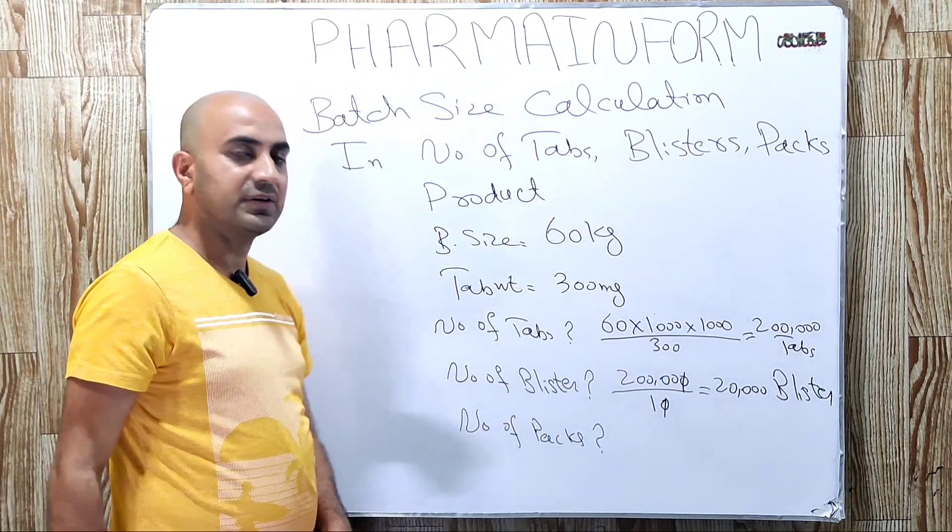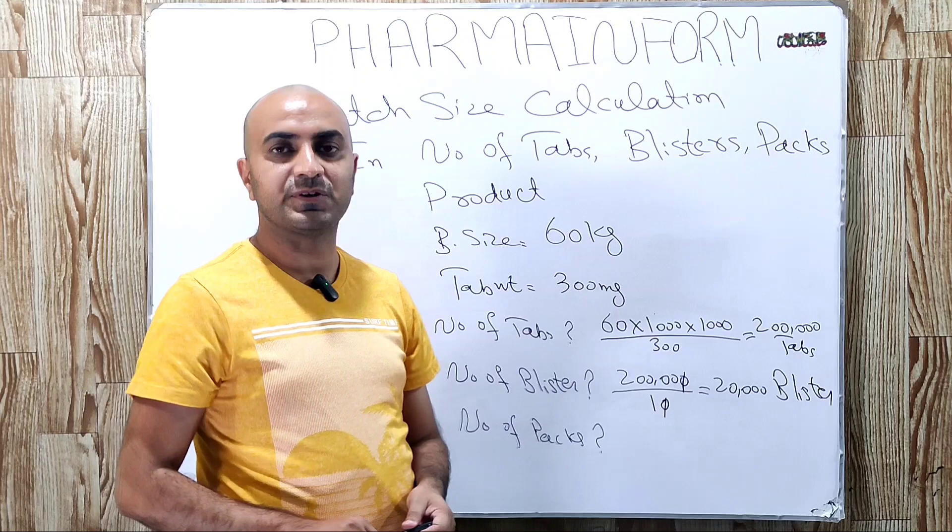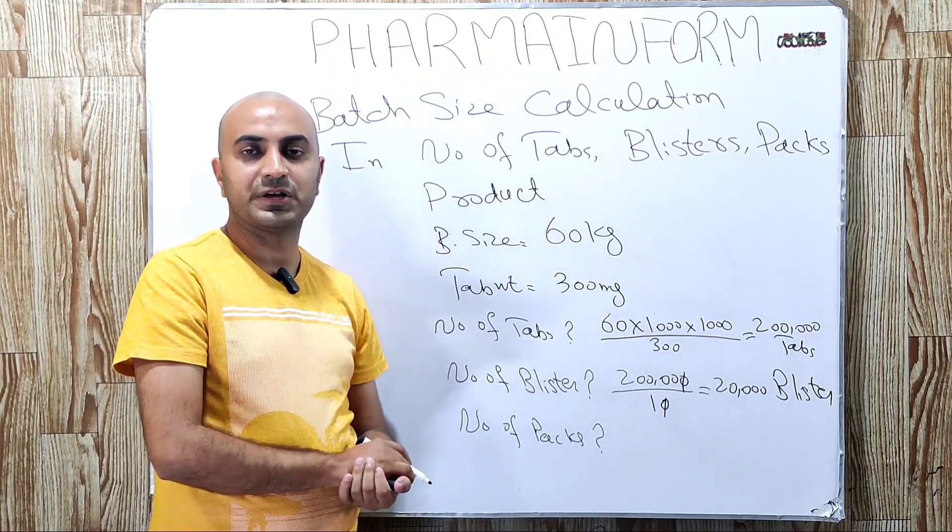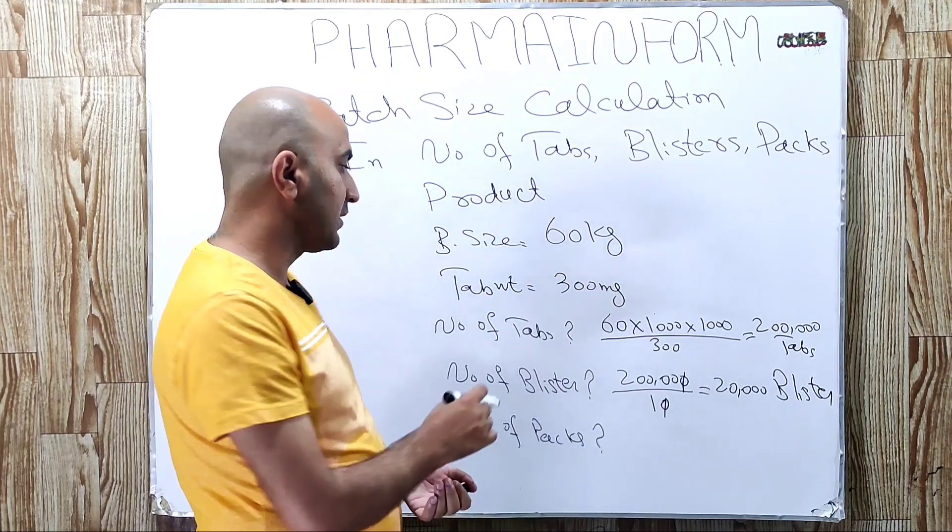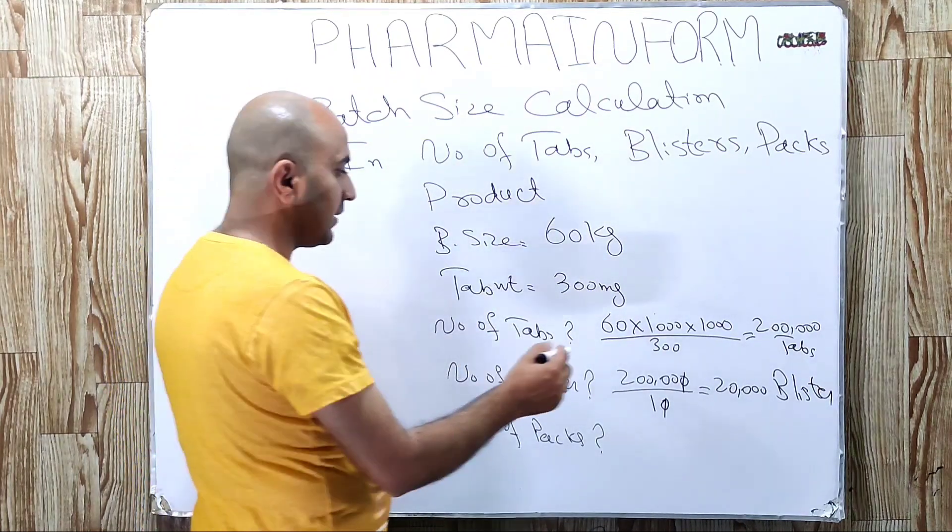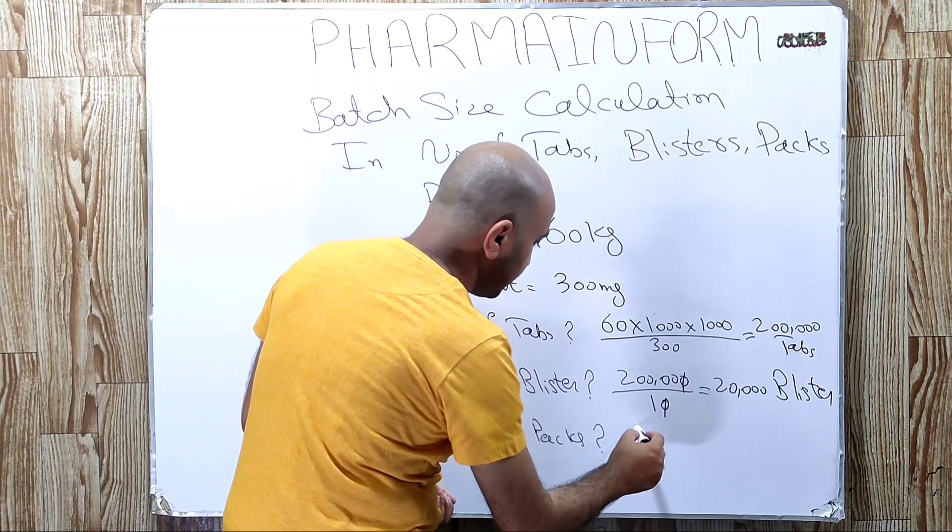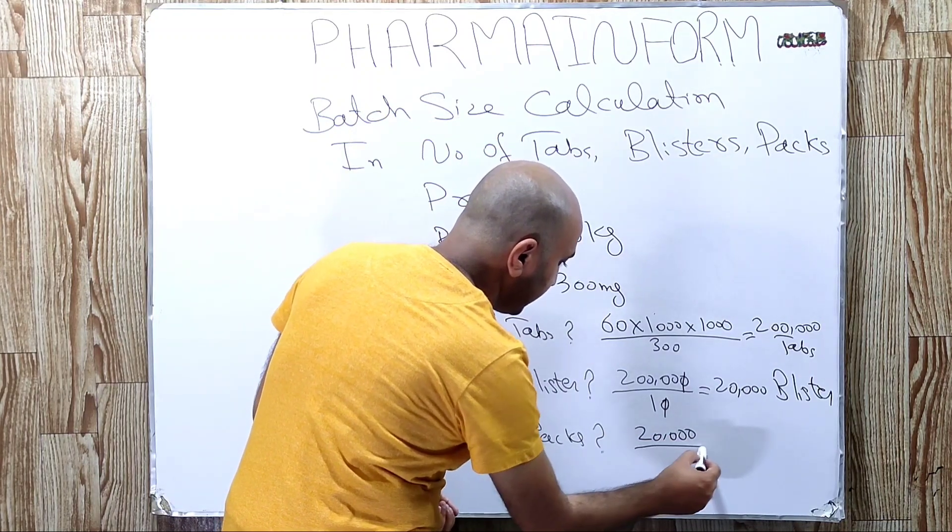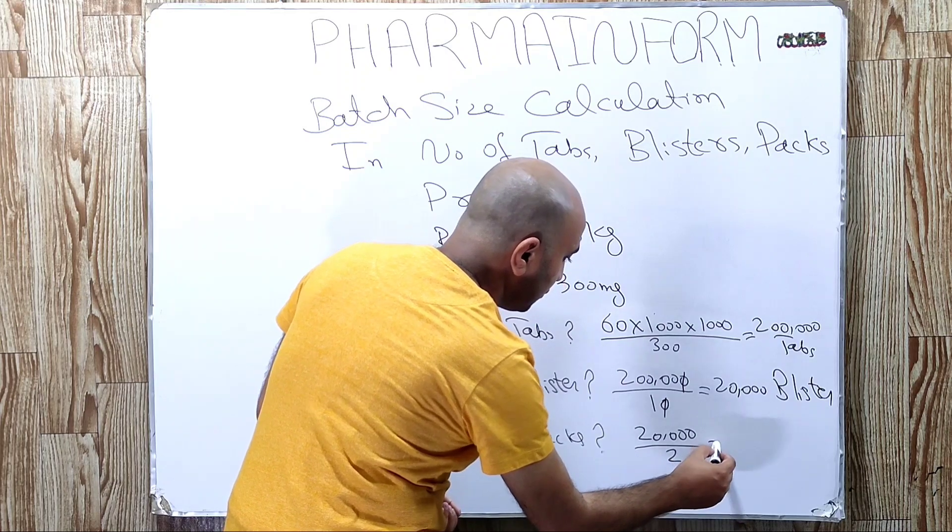The next one is number of packs. Our specification says each pack contains 2 blisters. So the number of packs from 20,000 blisters will be 20,000 divided by 2, equal to 10,000.